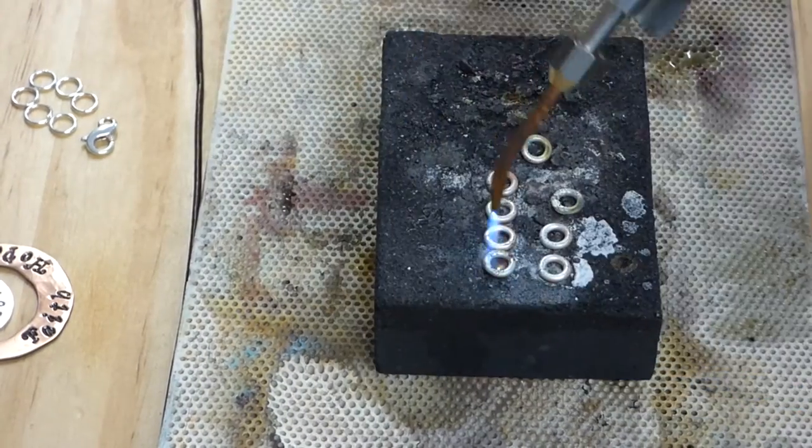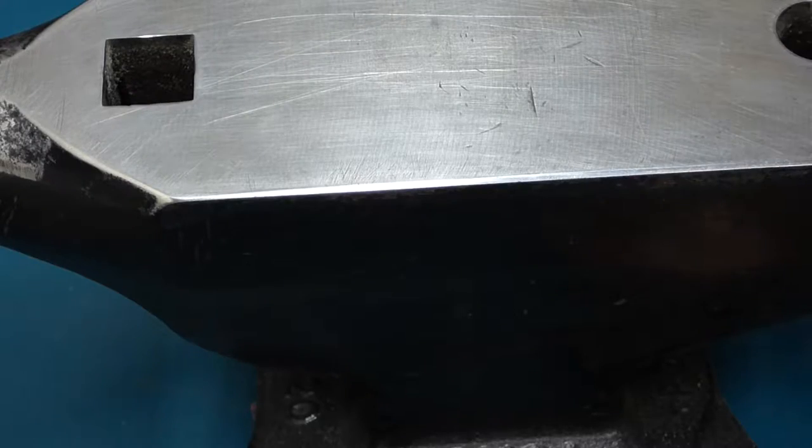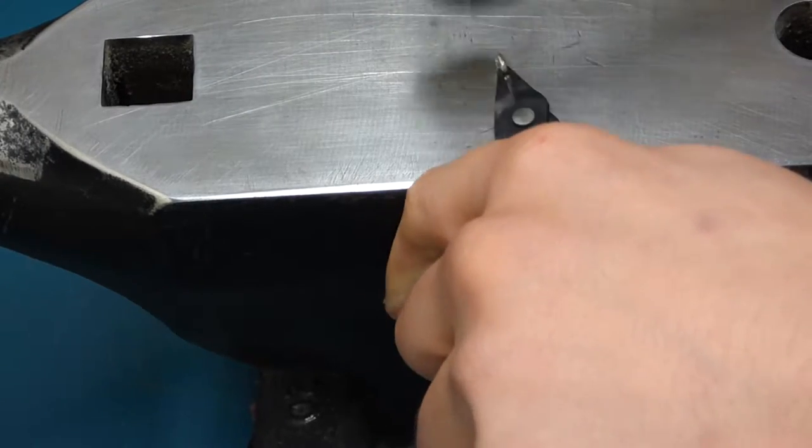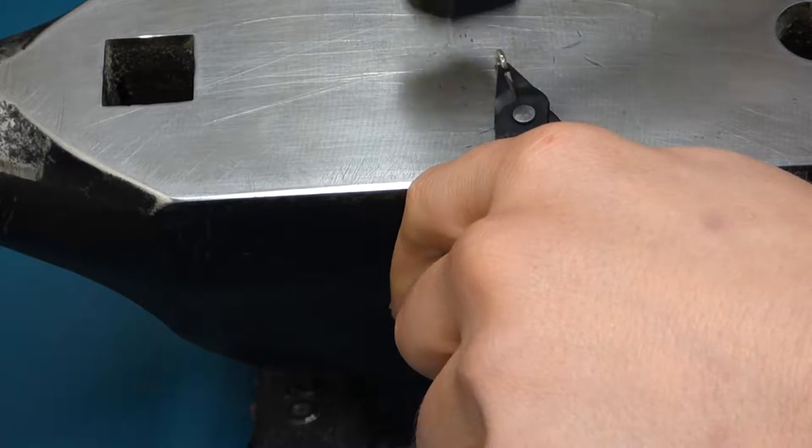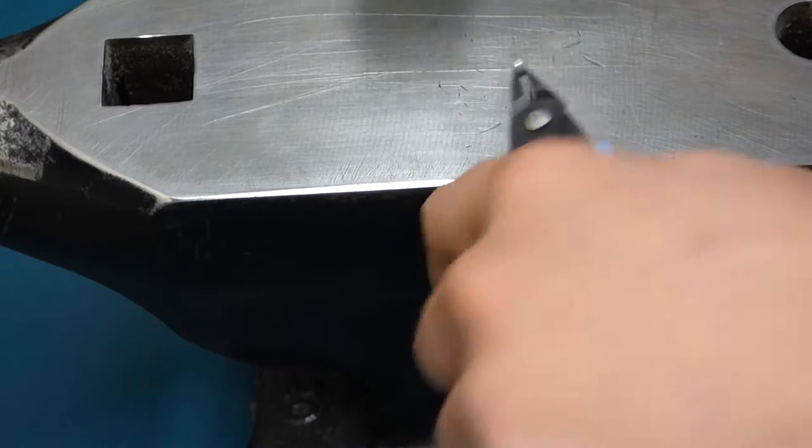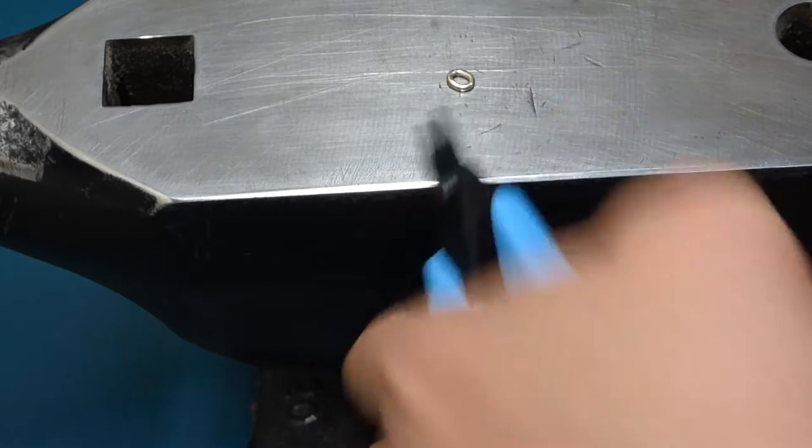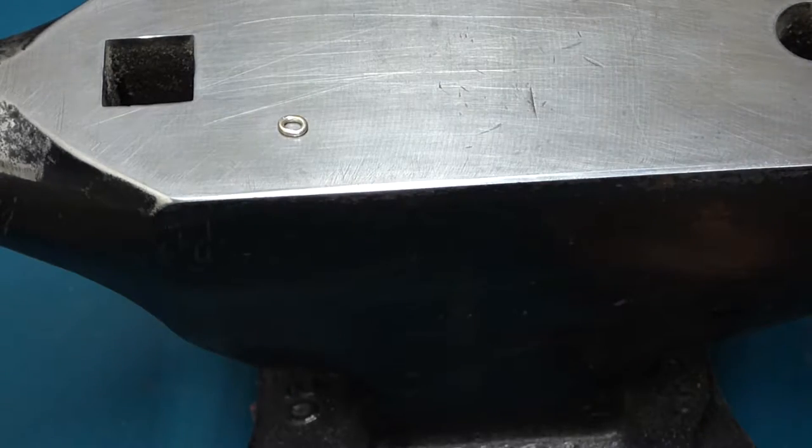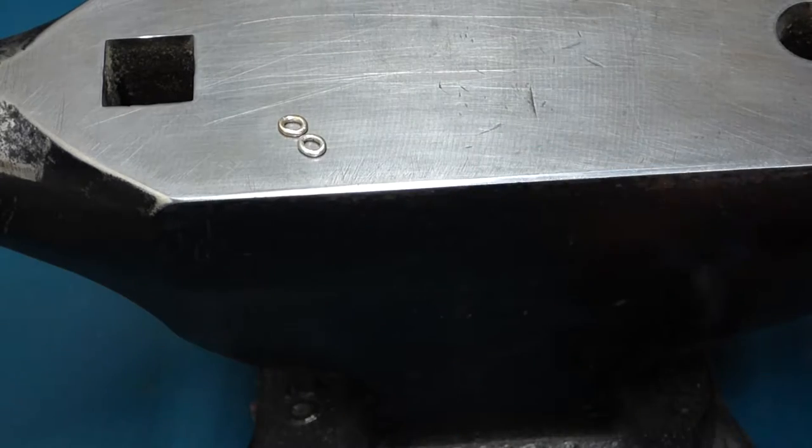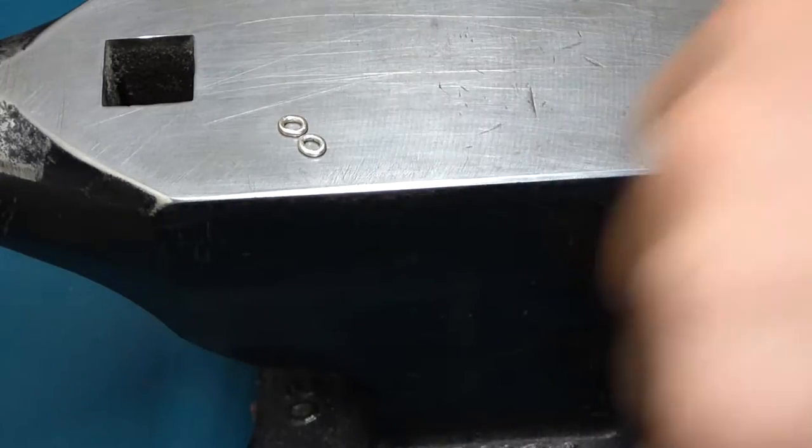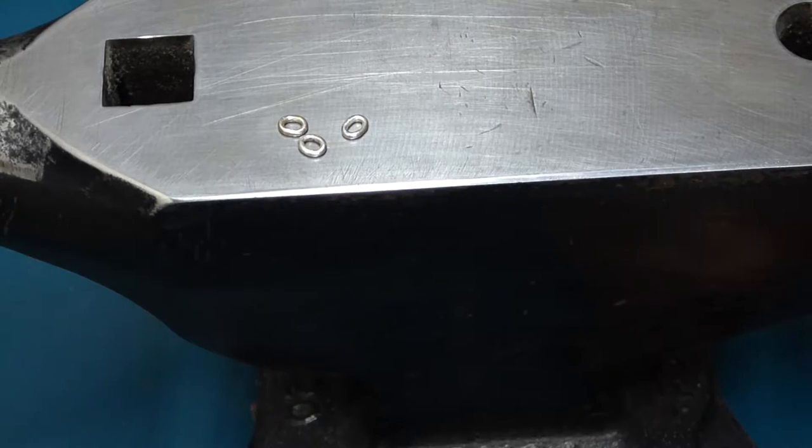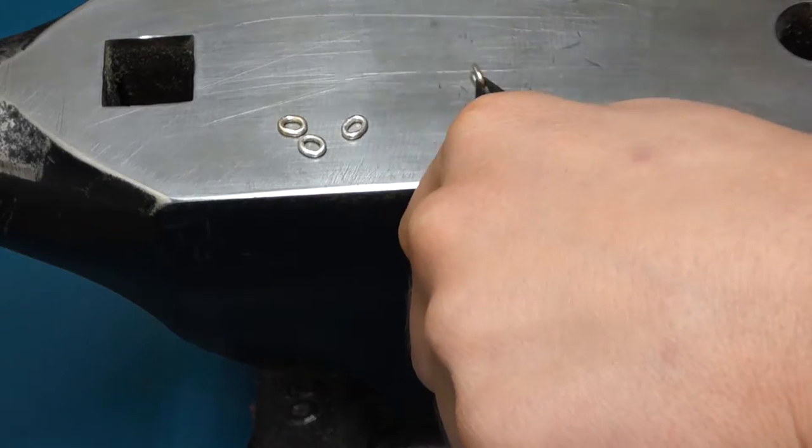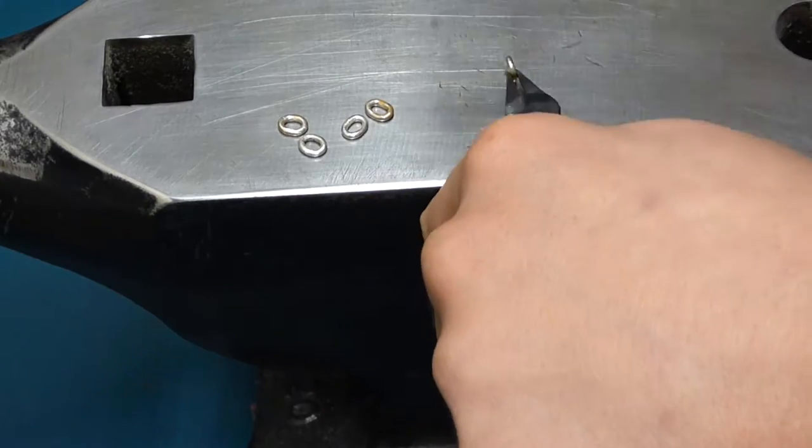So you don't need an anvil or anything crazy for doing this. Any hard surface and a hitting device is going to get you to where you need to be for this step. Because all we're doing is turning the rings into ovals so that the cord can be passed through there twice. One tip here is to keep the solder joint on top. It's much less likely to crack and open on you during the setting process. Then we just repeat the steps for all the rings here.